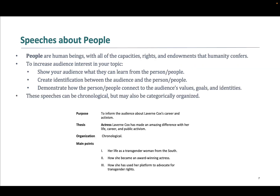Next are speeches about people. You can certainly choose your informative speech about a person who's somehow connected to your field of study, either a type of person or a specific well-known person. Find a connection between that person and the audience, and determine what the audience could learn from that person. Here's an example about the transgender actress Laverne Cox. This is organized chronologically, although sometimes these speeches are organized categorically.